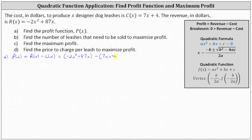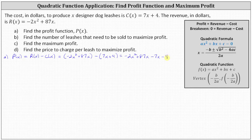It is important that we have the cost function in parentheses so that we subtract the entire function. Now we clear the parentheses and combine like terms. We drop the first set of parentheses: negative 2x squared plus 87x, and subtracting the cost function gives minus 7x minus 4. Combining like terms, 87x minus 7x simplifies to 80x, giving us the profit function p of x equals negative 2x squared plus 80x minus 4.